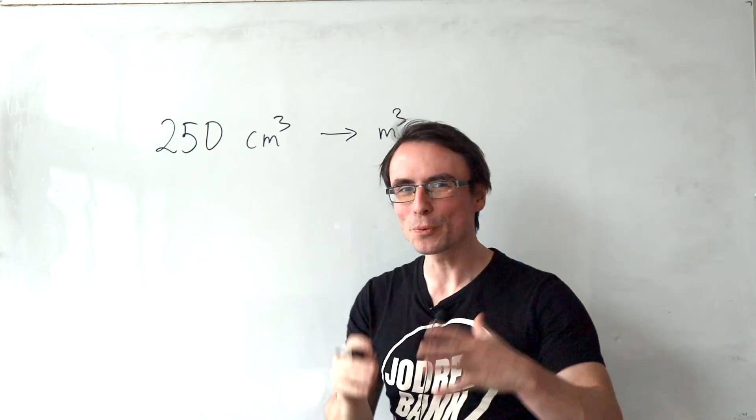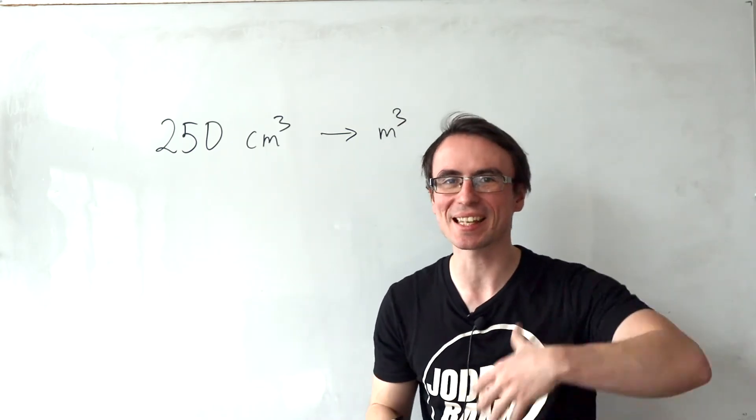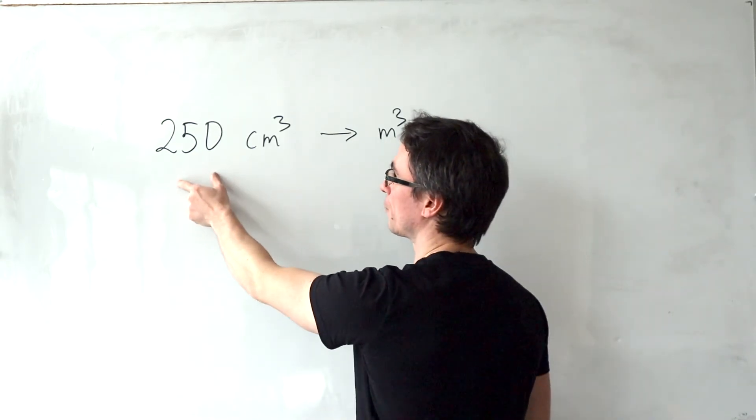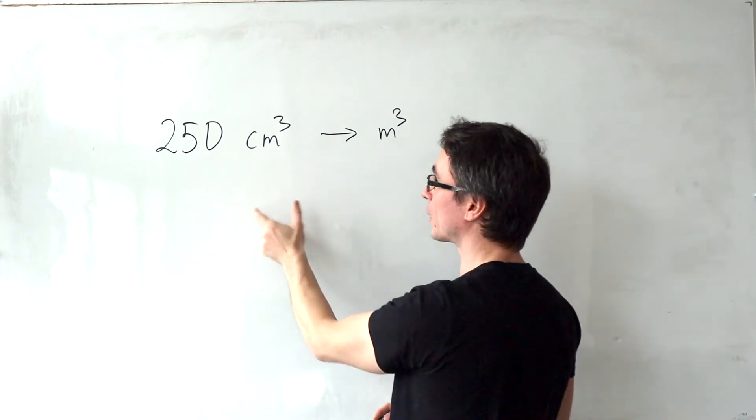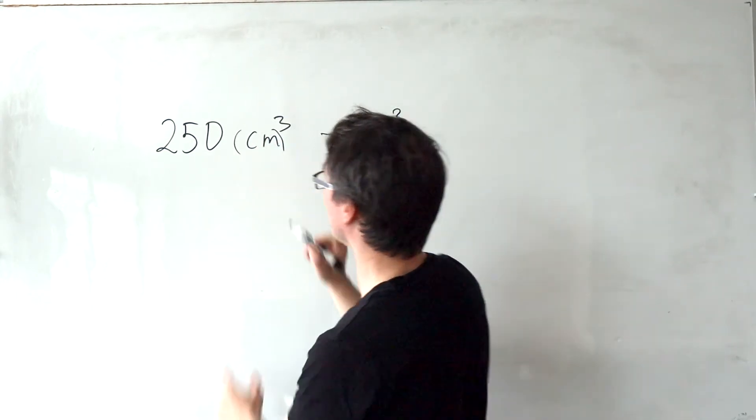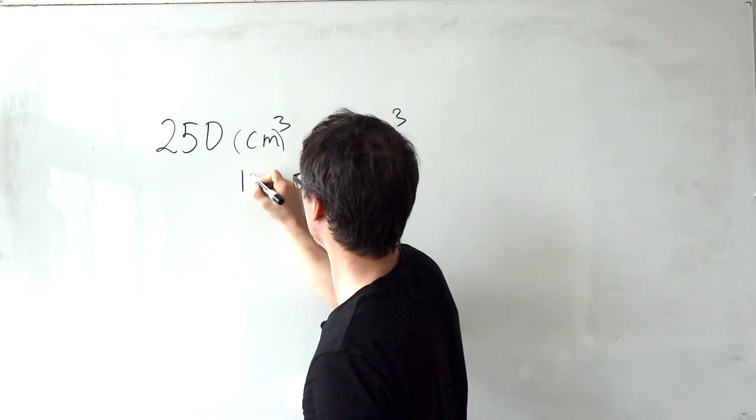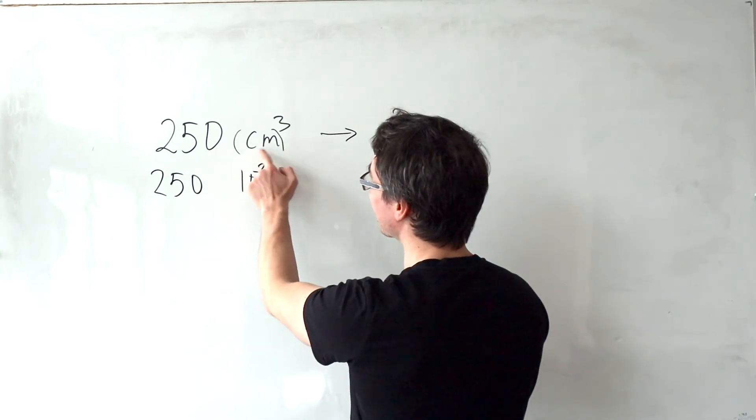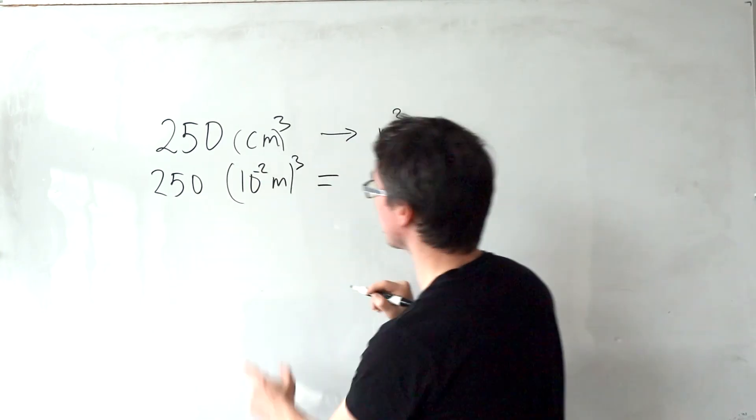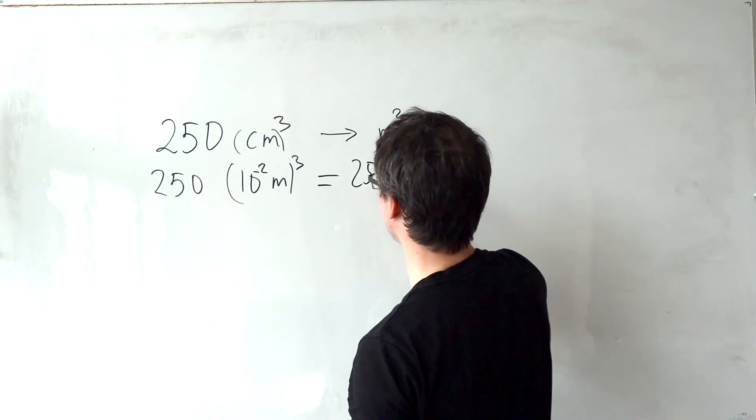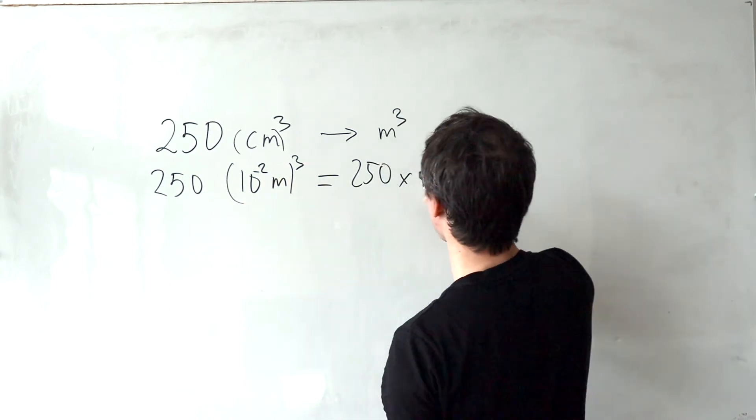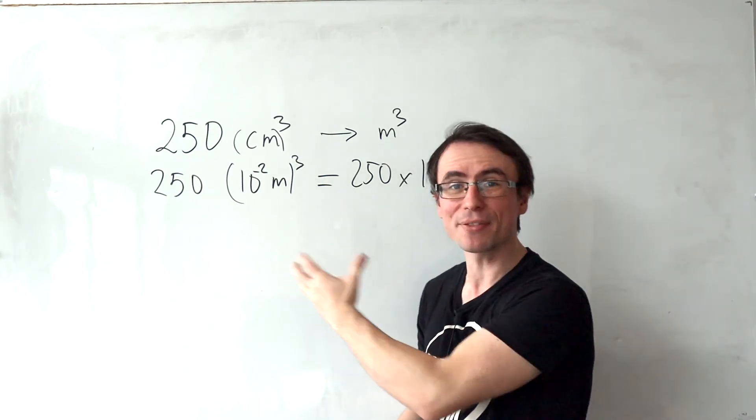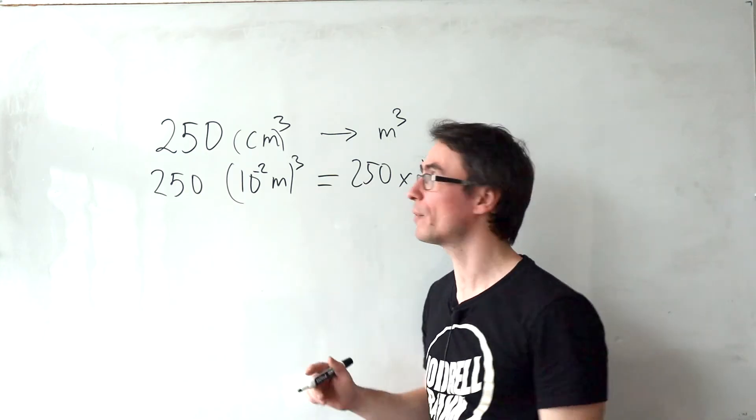This next one is really simple. However, I keep seeing mistakes like this every time I mark papers and I thought I would include it. If we have to convert 250 centimeters cubed to meters cubed, the cube acts on the prefix as well. Centi stands for 10 to the power of minus two. Therefore, 250 centimeters cubed will actually be equal to 250 times 10 to the power of minus six meters cubed.